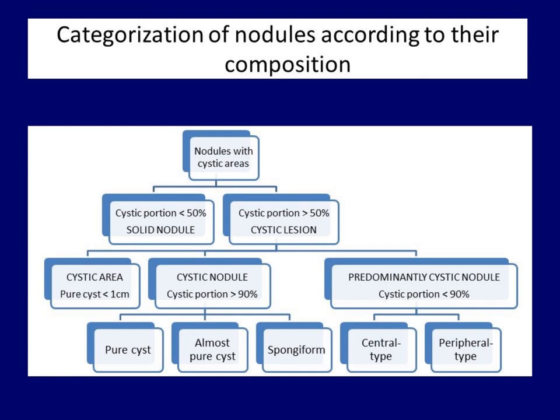Cystic nodules are divided according to the proportion of cystic content. If it exceeds 90 percent, then most guidelines use the term cystic nodule, while if the cystic content is between 50 and 90 percent, they classify the nodule as predominantly cystic. The point of distinguishing between cystic and predominantly cystic nodules is that malignancy is very rare in the former. The three practically almost always benign forms are the pure cyst, the almost pure cyst, and the spongiform type.